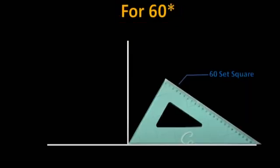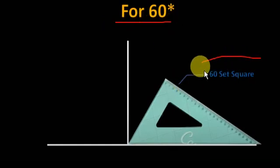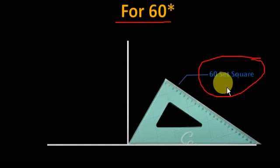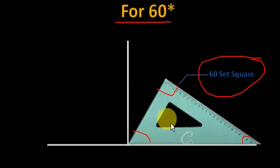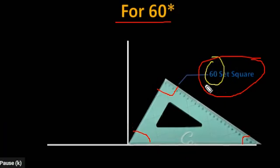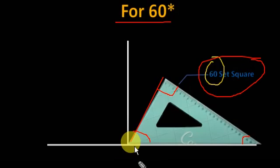Now let us see how to construct an angle of 60 degrees. To construct an angle of 60 degrees, you have to take the 60-degree set square — the scalene-shaped set square. You know that this is 90 degrees, here it is 30 degrees, and this is 60 degrees. You have to draw a line here. So this area is 60 degrees. I hope you understand how to construct an angle of 60 degrees.